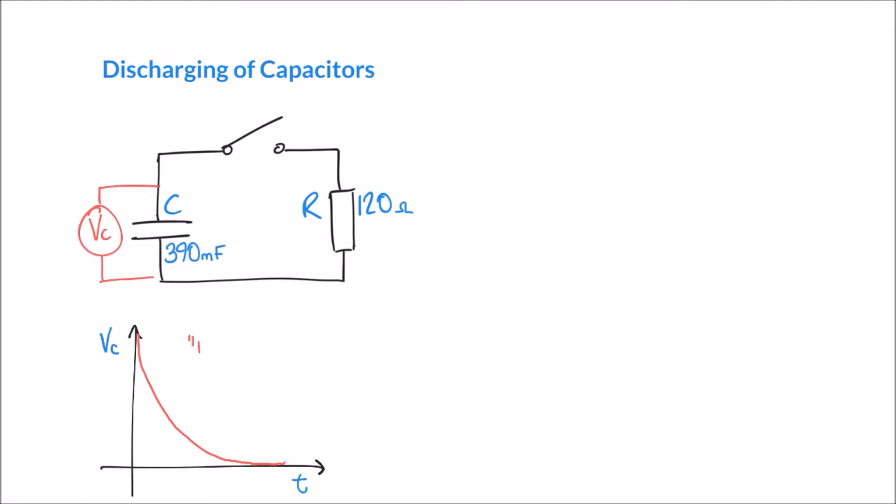This is called a decay curve, and it is another example of a transient in circuits. We'll also look at another component called the inductor, which exhibits similar transient behavior, but for this video we're going to focus on this decay curve and what it means for simple circuits like the one shown.